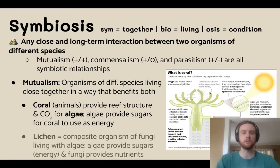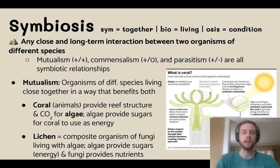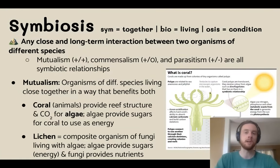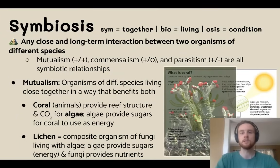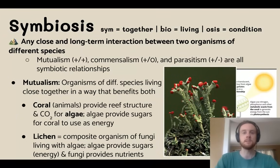We have another mutualistic relationship so close that we consider the two species one single composite organism — that's lichen. Lichen refers to a broad class of organisms where fungi live in very close proximity with algae: the algae provide sugars or energy that the fungi need, and the fungi provide nutrients that the algae need in order to photosynthesize and grow. These two organisms — a fungus and an alga — function basically as one single organism.